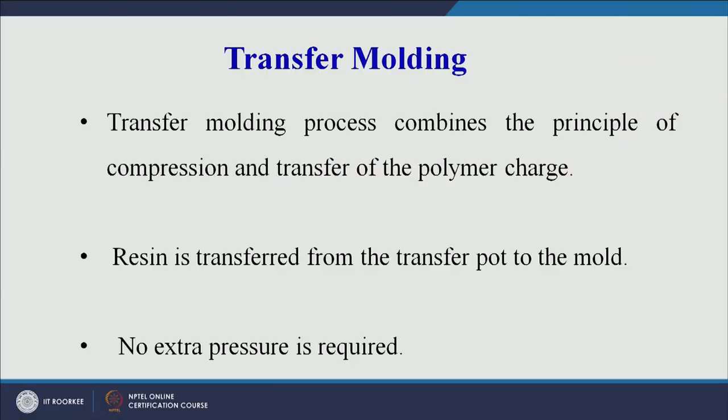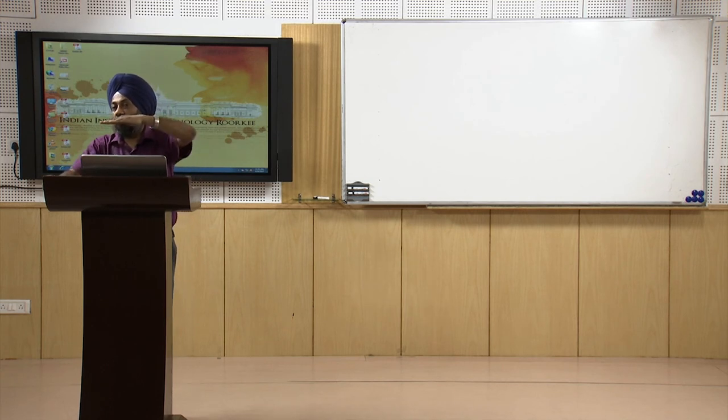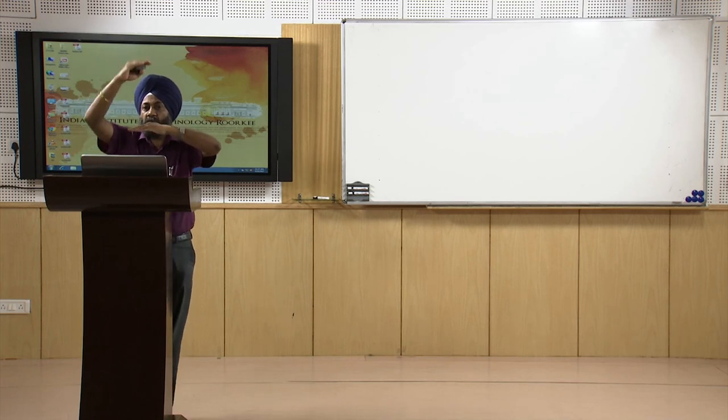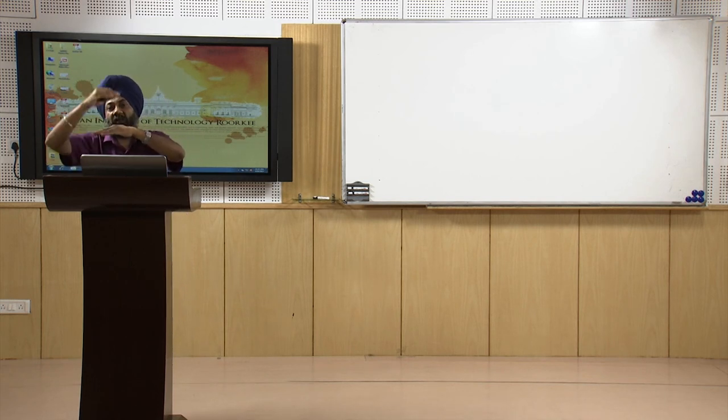Transfer molding combines the principles of compression and transfer of the polymer charge. It is a slightly advanced version of compression molding. In compression molding, there is a bottom half and a top movable half of the mold, and the raw material charge is placed between them. When the two mold halves close, temperature and pressure are controlled.